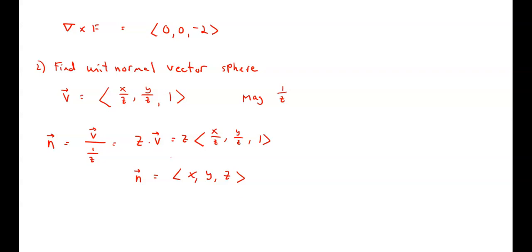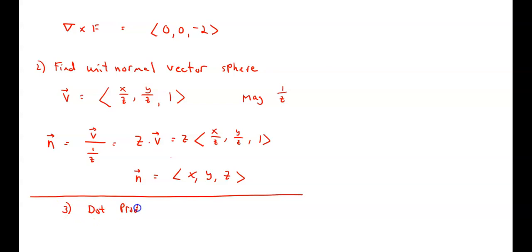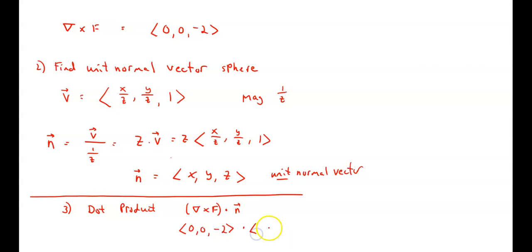My third step is to take the dot product of the cross product with the unit normal vector. The first entry is the vector 0, 0, negative 2. The second entry is the vector X, Y, Z. When we take the dot product, we get 0 times X plus 0 times Y plus negative 2 times Z. So the dot product of those two vectors gives me negative 2Z.